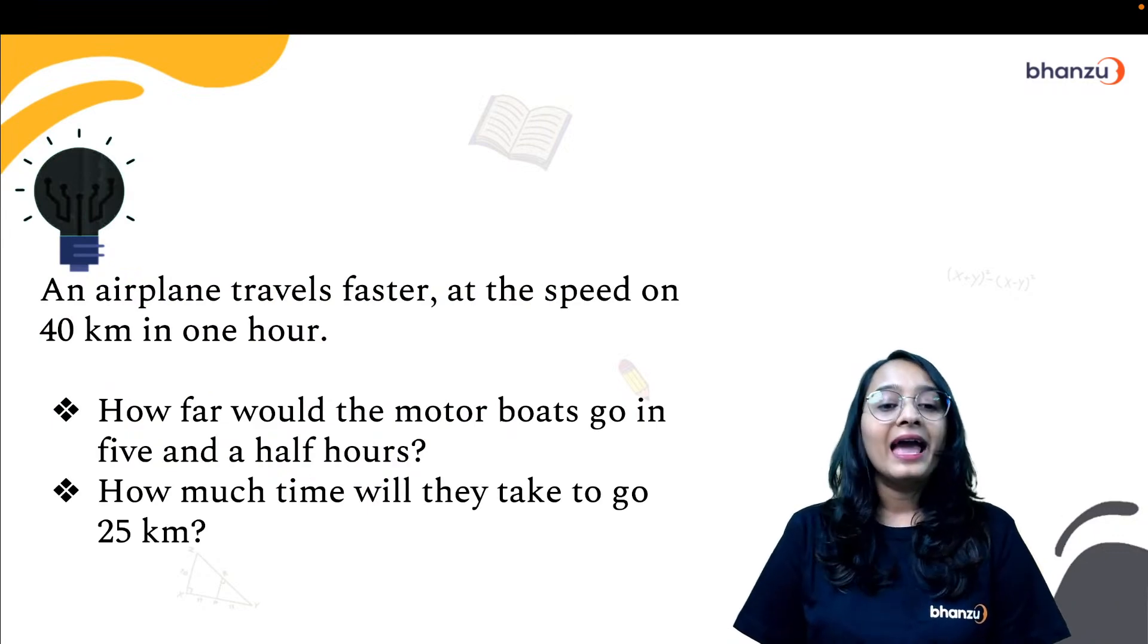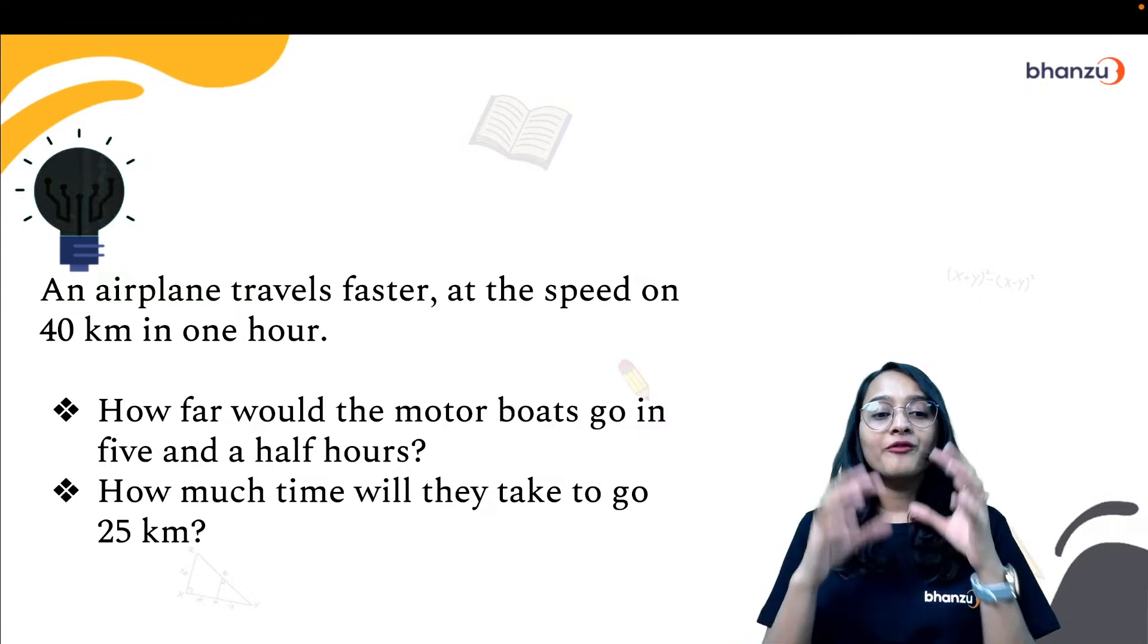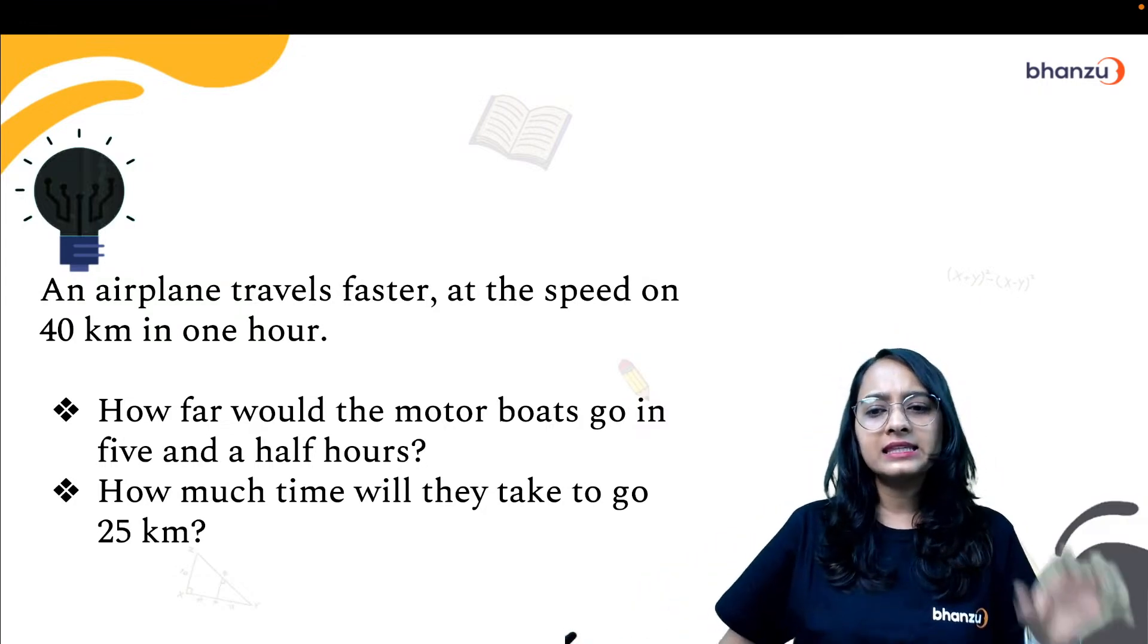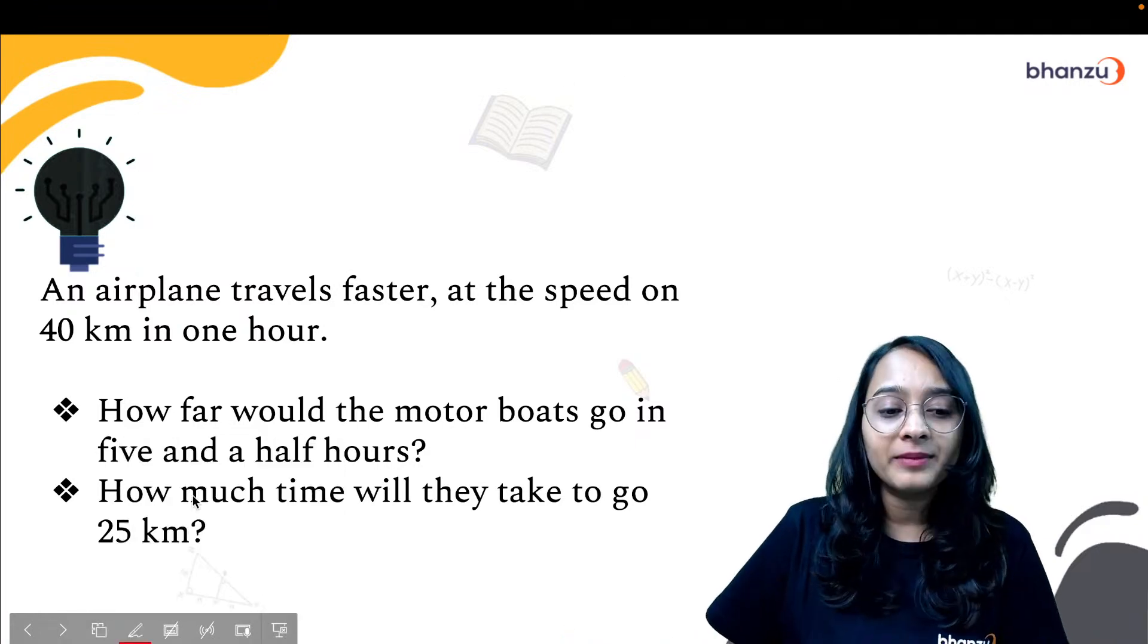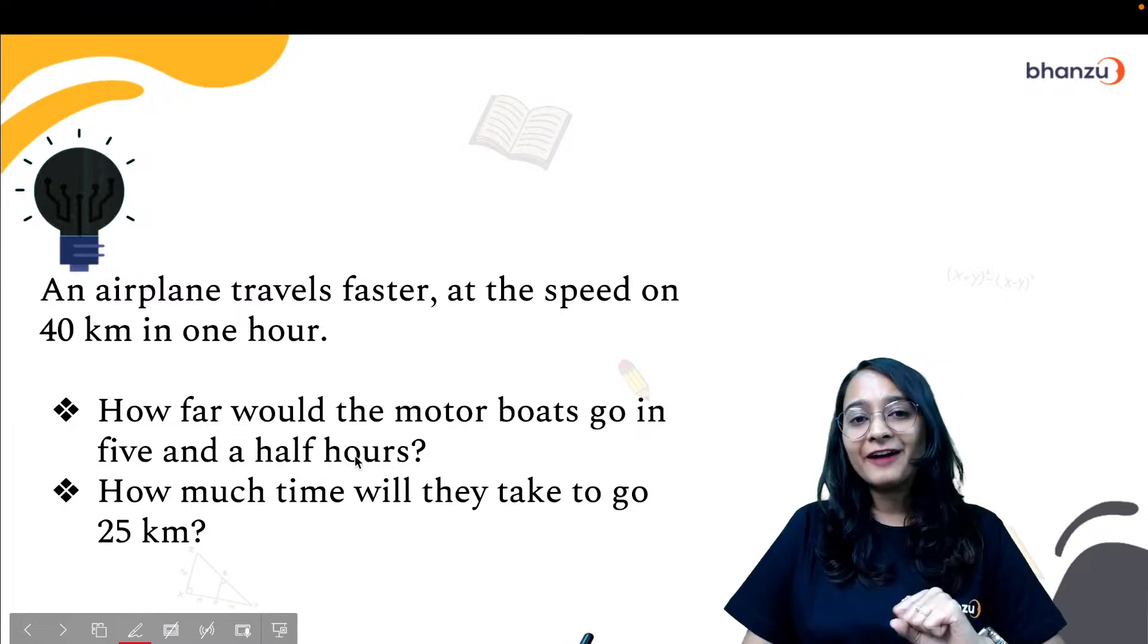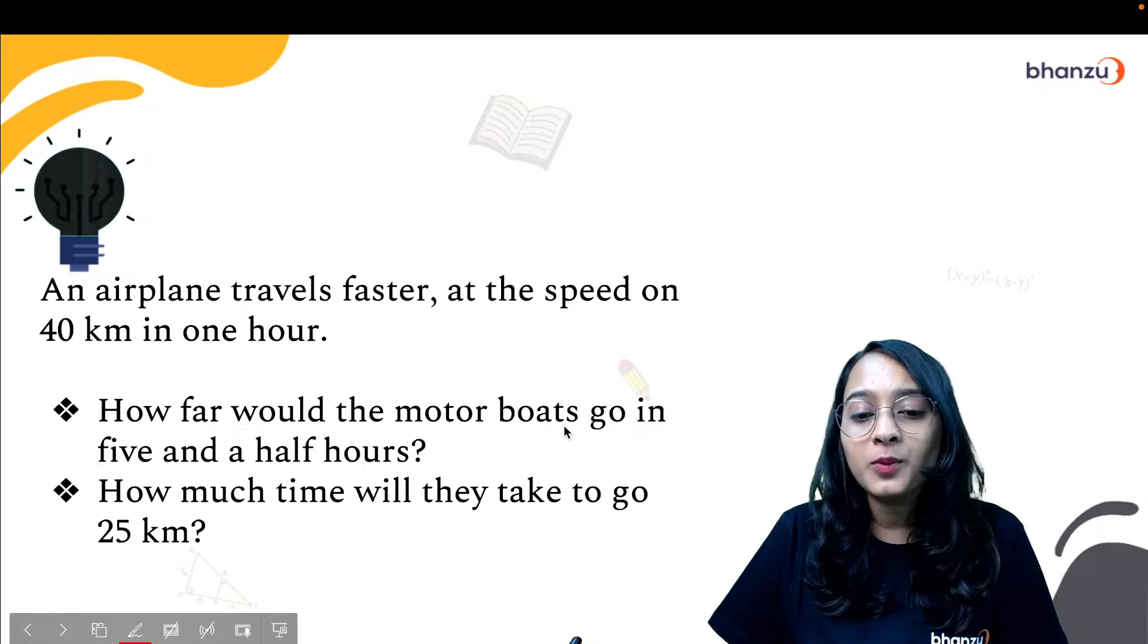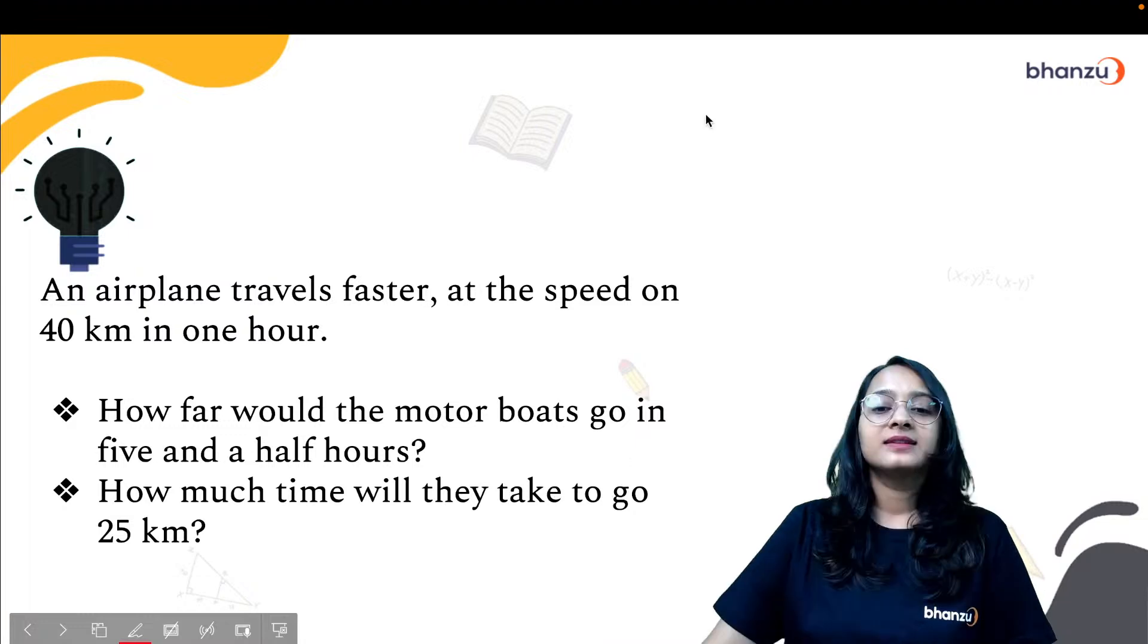The first question is on your screens. An airplane travels faster at the speed of 40 kilometers in one hour. So there's this super fast airplane which travels 40 kilometers in one hour. So what is that we have to find? We have to find how far would the motor boats go in five and a half hours.